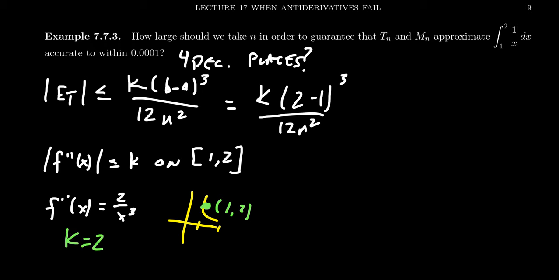Using this above, we now look at 2. Notice 2 minus 1 is 1, 1 cubed is 1, so the numerator is going to be 2. We have a 12n squared. This is our error bound for the trapezoidal rule. And what we want this to do is we want this to be less than or equal to 0.0001, or if you prefer, you can think of it as a fraction, 1 over 10,000.